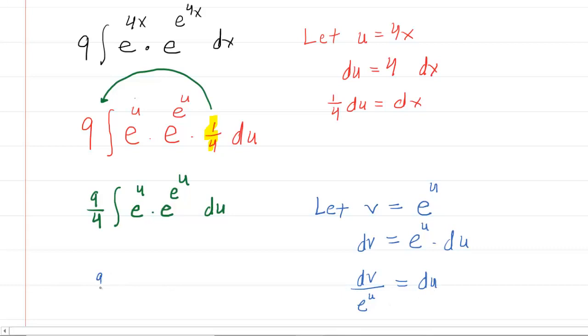Holy smokes. Okay, so let's go back here. We have 9 fourths times the integral of e to the u times e raised. Now this e to the u right here, we're going to replace that with v. So this becomes e to the v. And then du is going to be substituted with dv over e to the u.